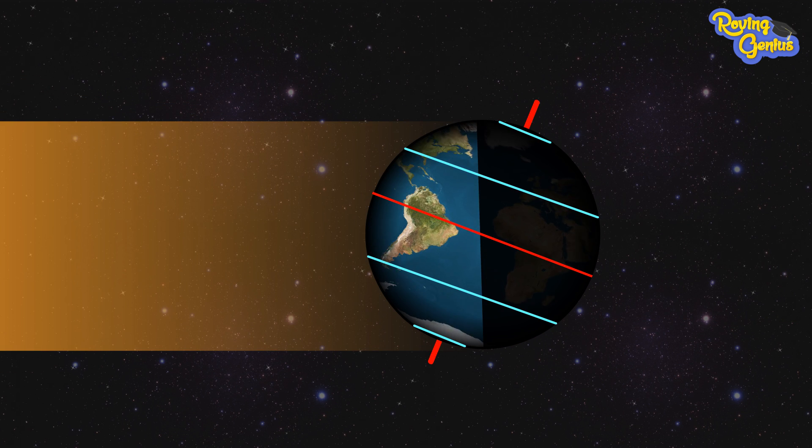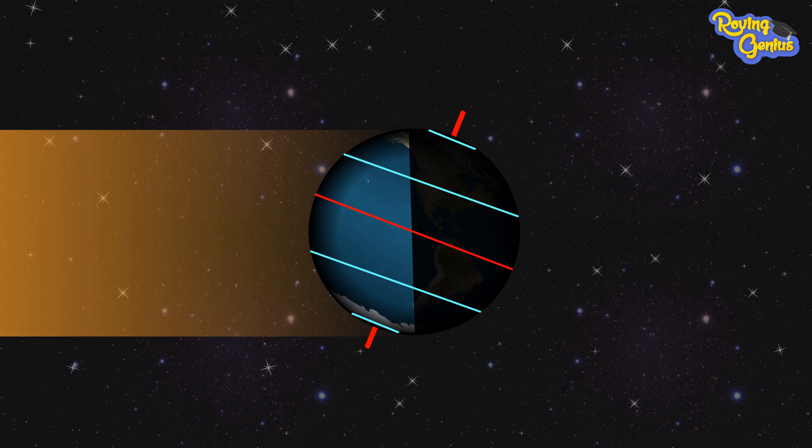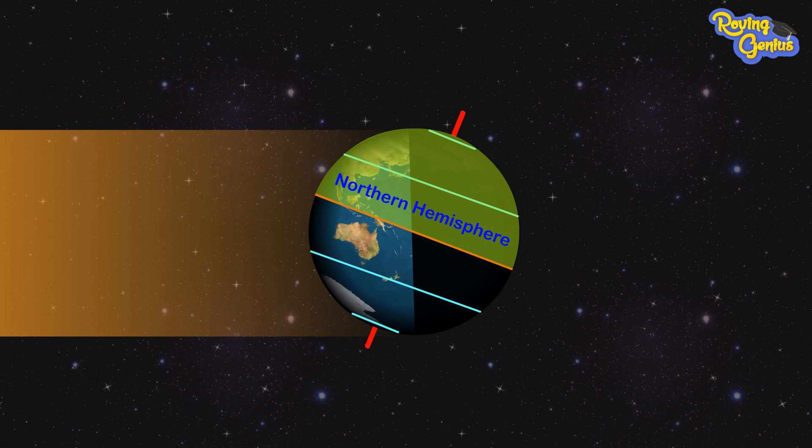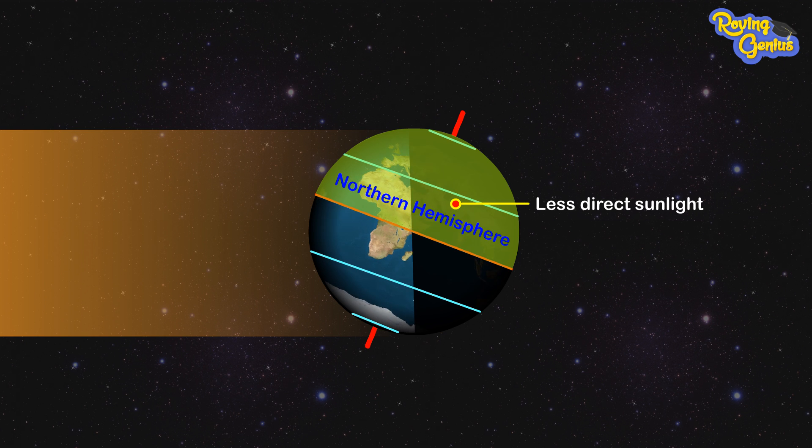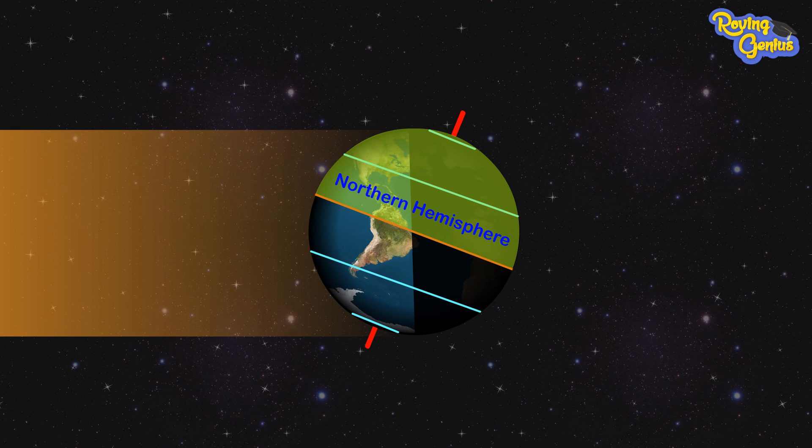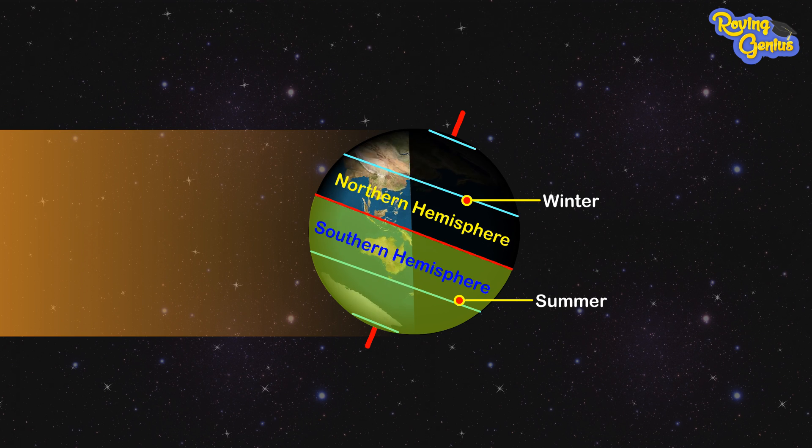Later, when the North Pole is tilted away from the Sun, the Northern Hemisphere receives less direct sunlight. It is now winter in the Northern Hemisphere and summer in the Southern Hemisphere.